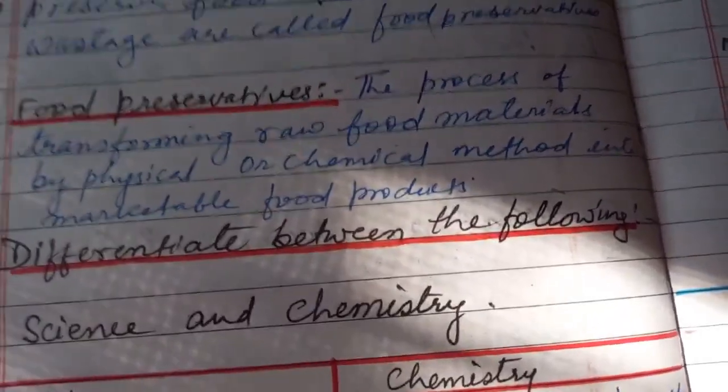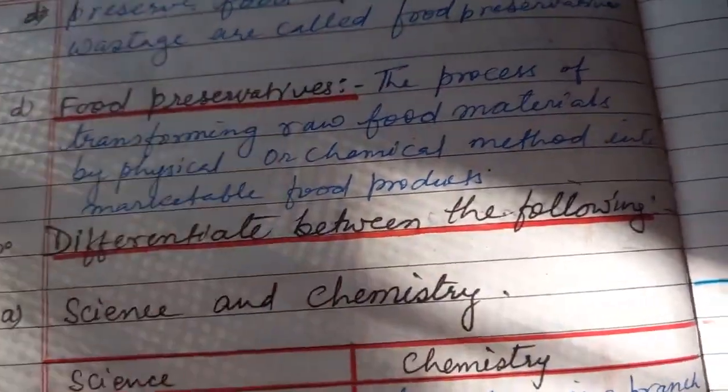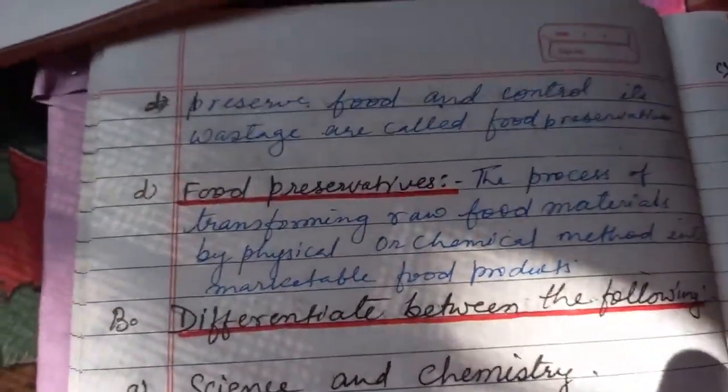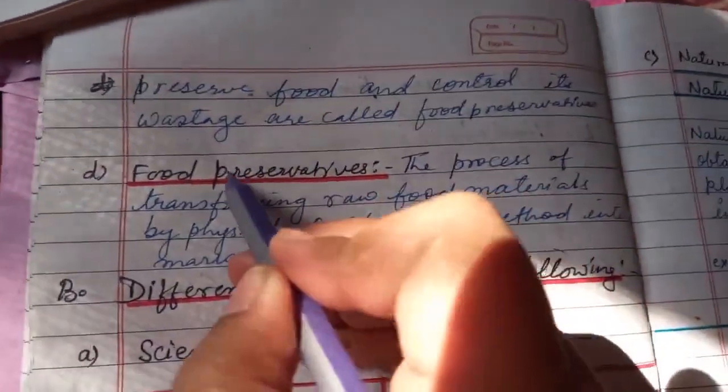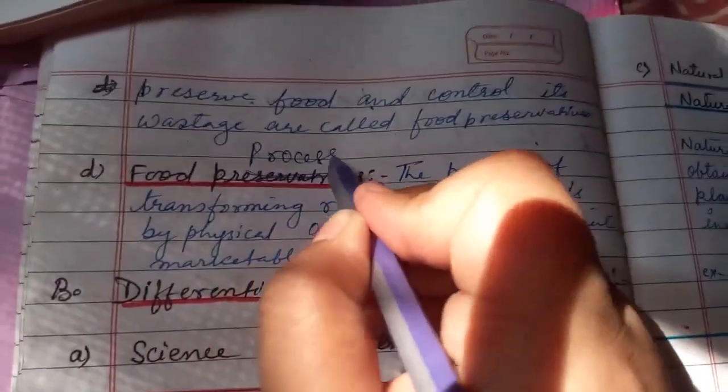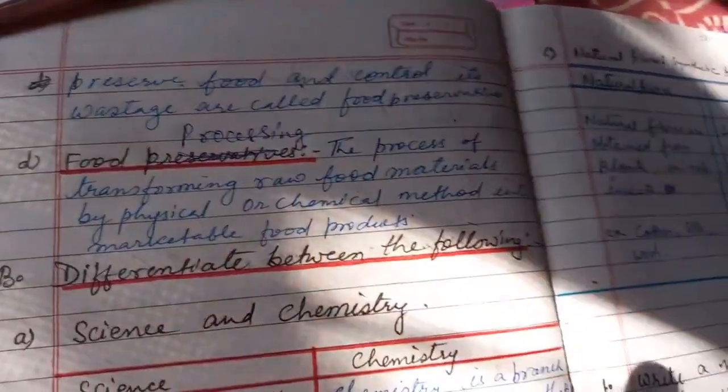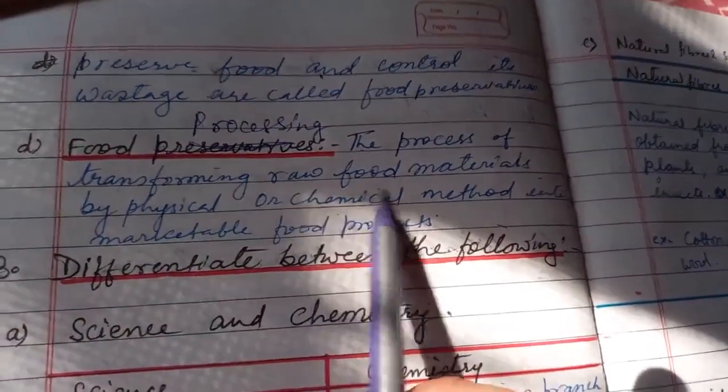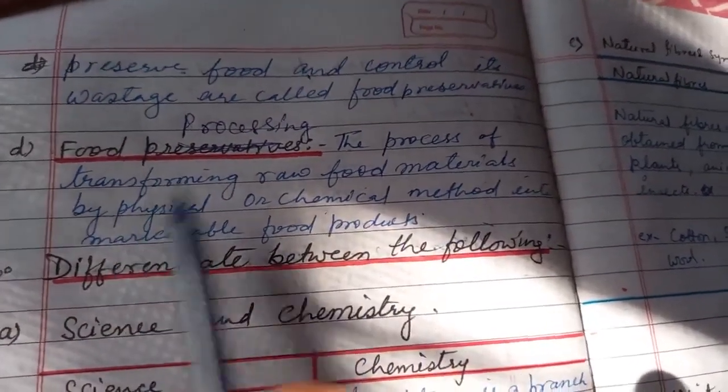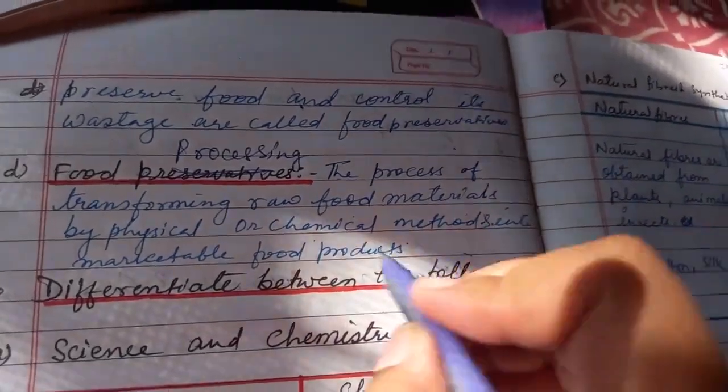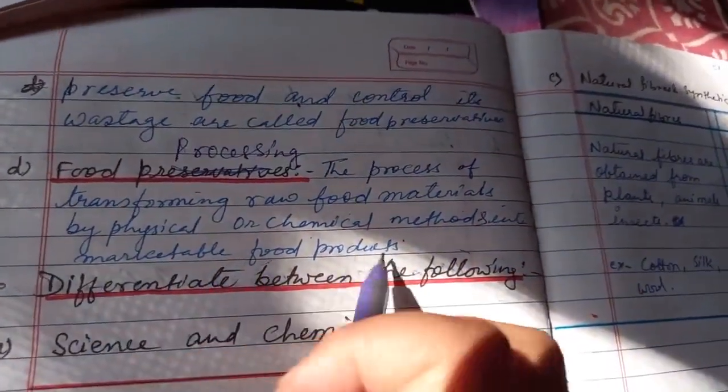Again, same question: food processing. You will write the definition: the process of transforming raw food materials by physical or chemical methods into marketable food products.